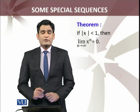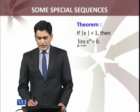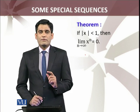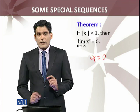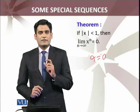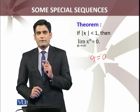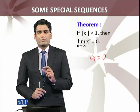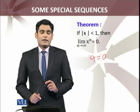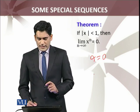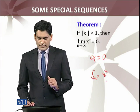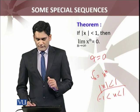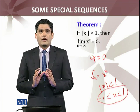Next theorem: if |x| < 1, then lim_{n→∞} x^n = 0. Yeh jo sequence hai, it is a particular case of the previous sequence — set α = 0 in the previous result. Apply the earlier special sequence result (1/n^p → 0 for p > 0) and set α = 0 in the previous theorem. This allows you to prove that lim_{n→∞} x^n = 0 whenever |x| < 1, meaning x is between −1 and 1.